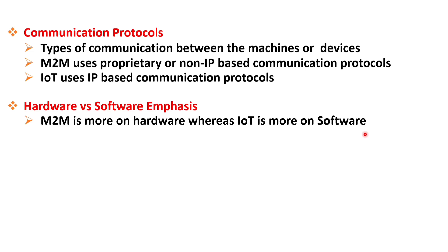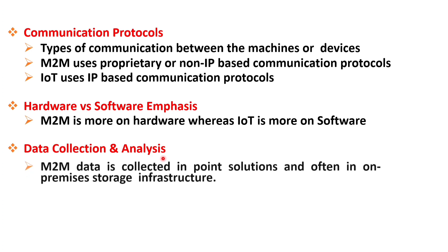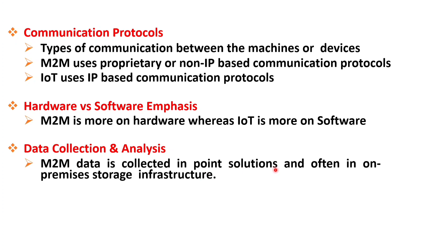Now let's explore another key difference related to data collection and analysis. In M2M systems, data collection is typically implemented as a point solution. This means the data is gathered from individual machines or devices and stored locally, often in on-premises storage infrastructure. M2M systems are designed for specific applications or use cases, and the data collected is usually limited to the needs of those particular solutions only.